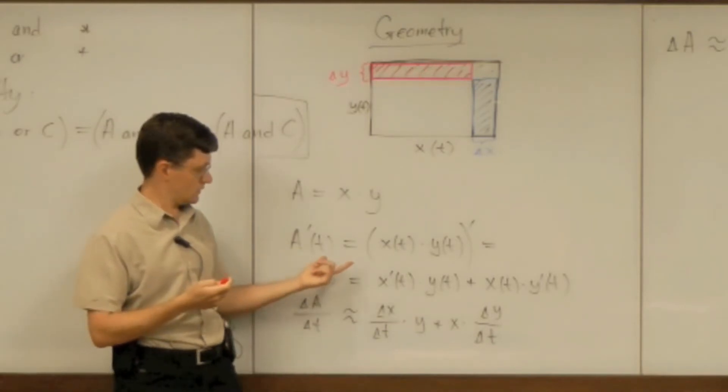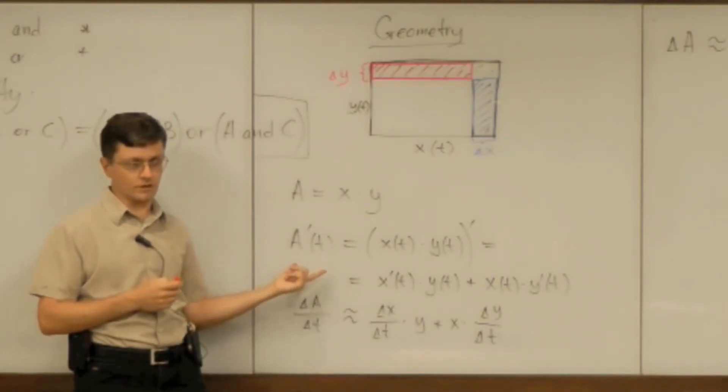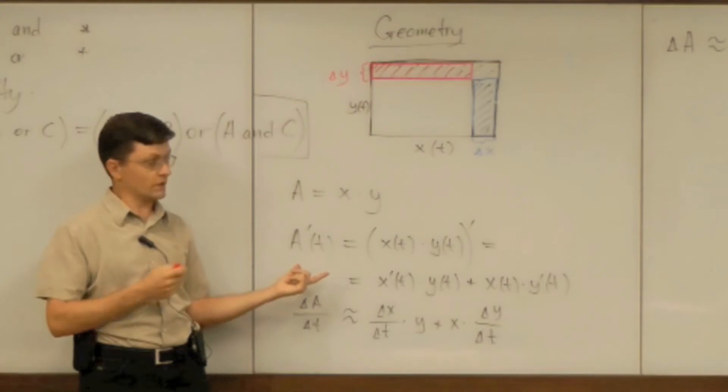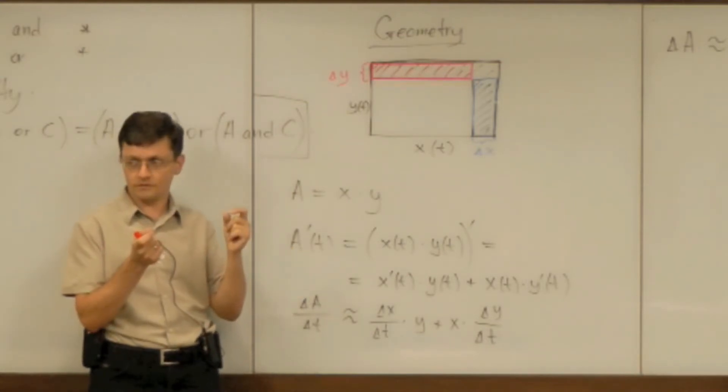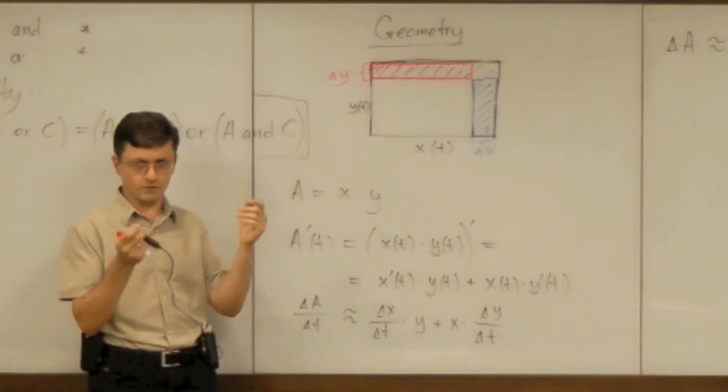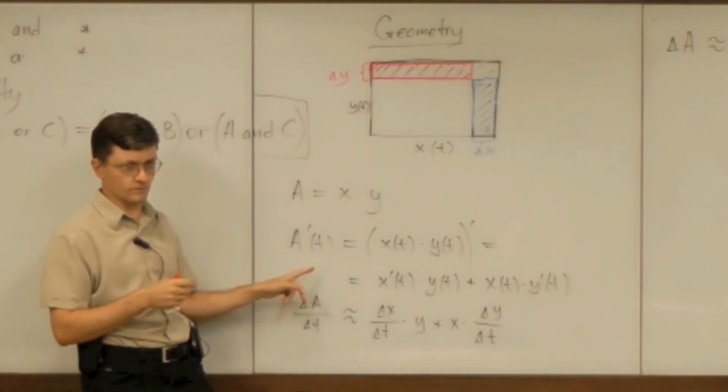Well the reason is that what kind of limit is it that we take? We make all the deltas go to zero right? That's the meaning of the limit that we take here for differentiation.